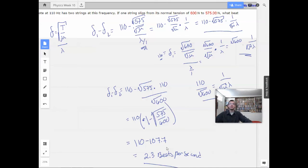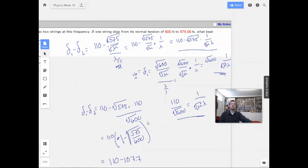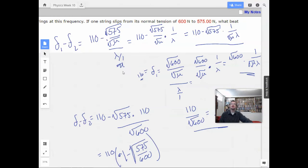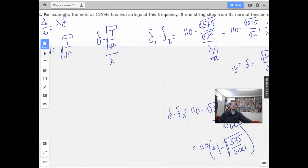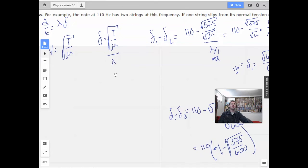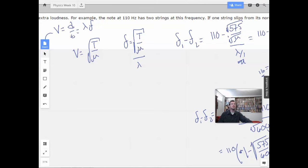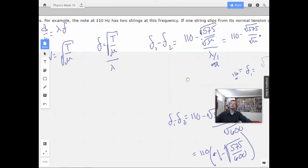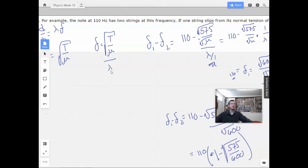So the way we found the frequency of the wire that slipped was we used the equation frequency equals velocity over wavelength. Well, for velocity, we used tension and the mass per unit length. But we didn't know the mass per unit length or the lambda.